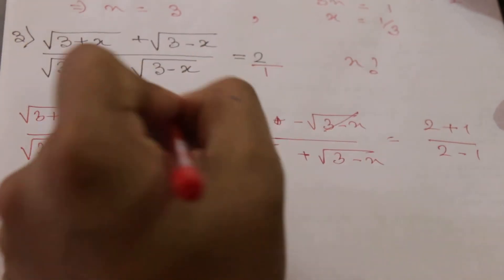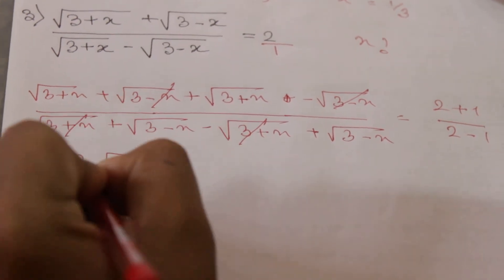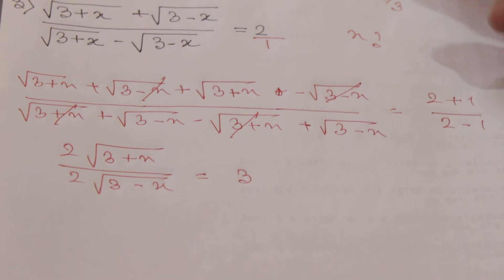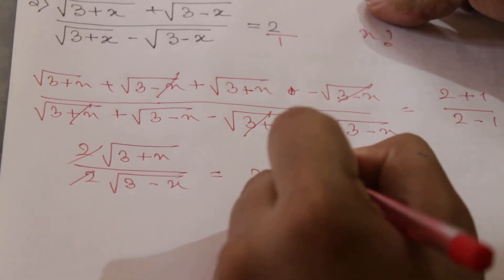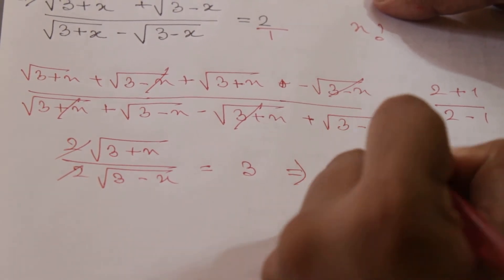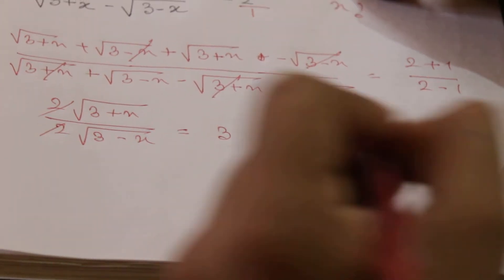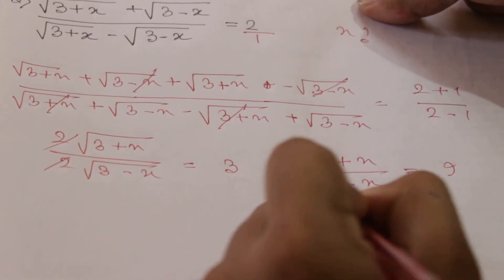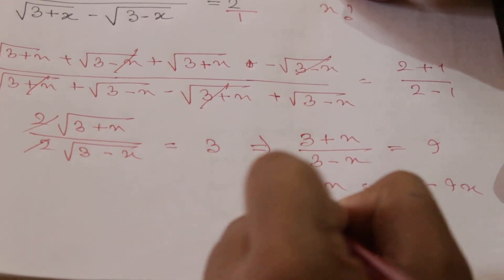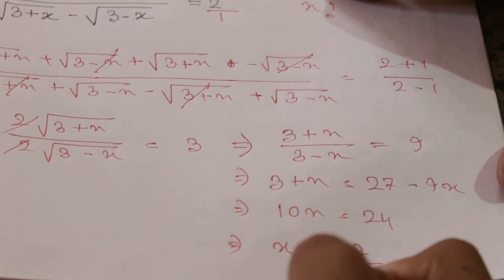These two terms cancel out each other, and these two also cancel out each other. After the cancellations, the 2s cancel as well. We then square both sides — the left-hand side and right-hand side simplify accordingly — giving 3 + x = 27 - 9x, so 10x = 24, and x = 12/5.